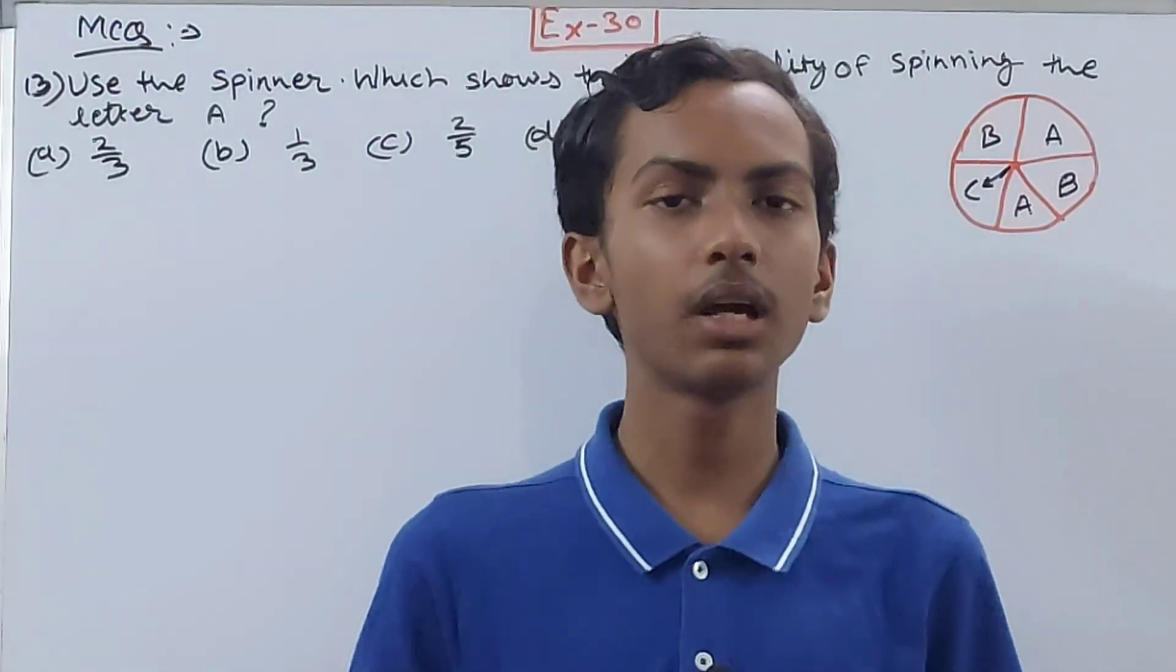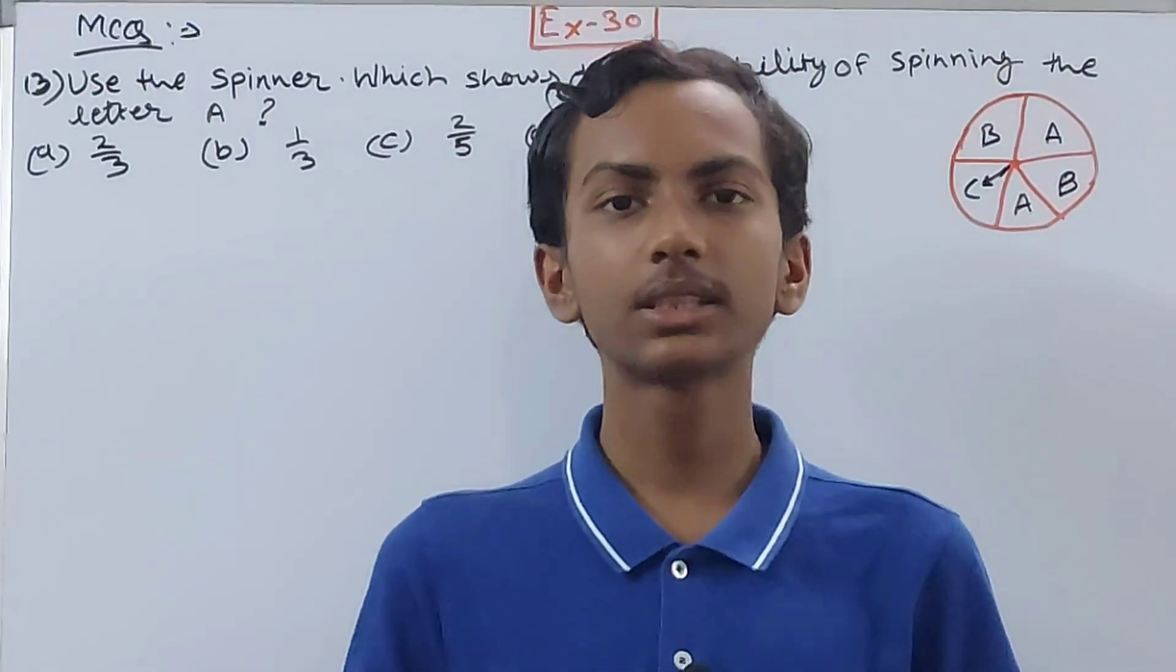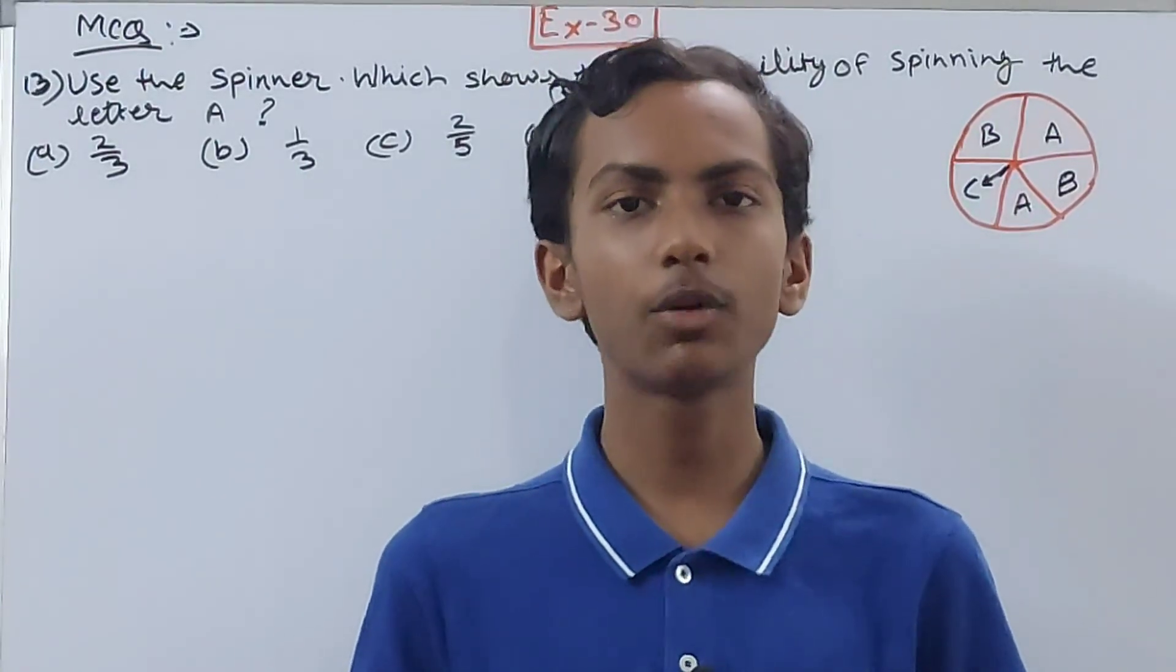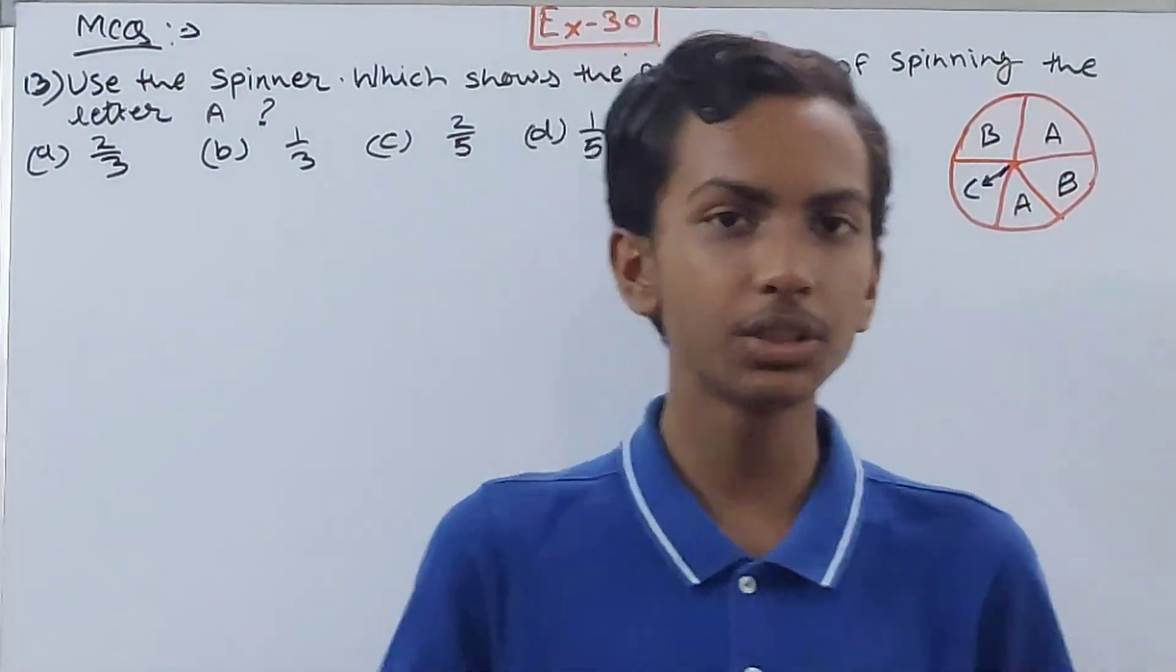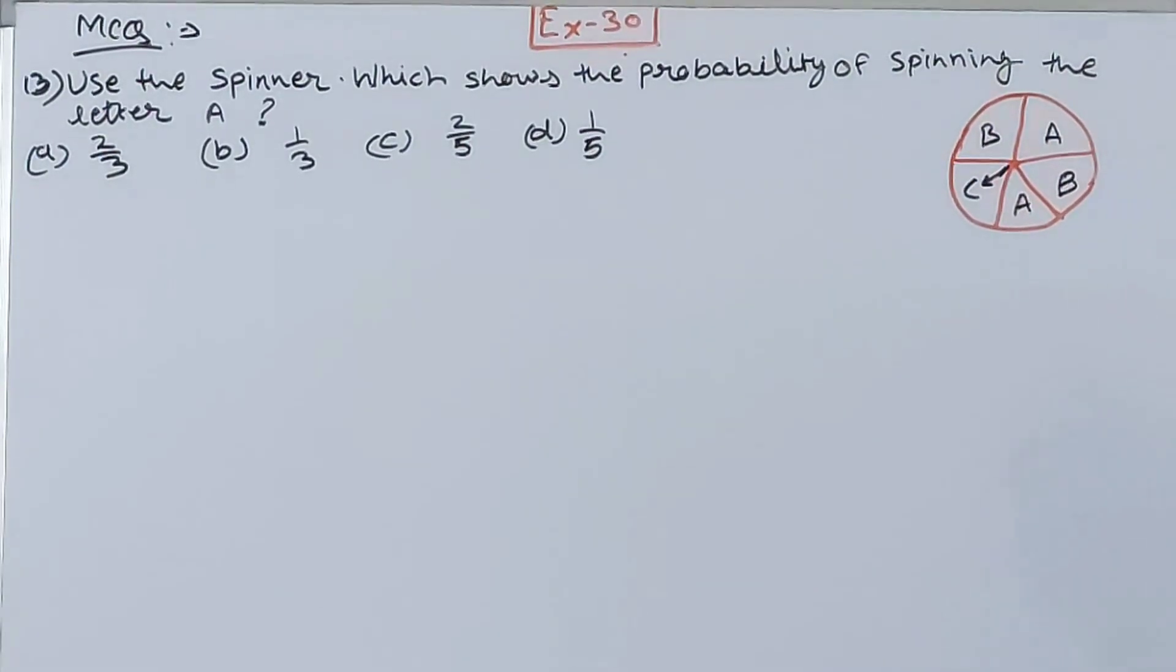Hello friends, welcome back to my YouTube channel, Unlock Your Learning. In this video, we are going to solve ICAC Mathematics class 8th, chapter number 30, Probability, exercise 30, question number 13. Use the spinner which shows the probability of spinning the letter A.